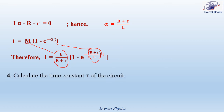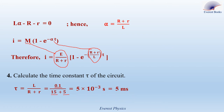Part 4: calculate the time constant τ of this circuit. The time constant τ is given by τ equal to L over (R plus r). Replacing each physical quantity: L is 100 millihenry, equivalent to 0.1 henry; capital R is 15 ohms and small r is 5 ohms. Therefore, τ is equal to 5 times 10 to the power minus 3 seconds, which is equivalent to 5 milliseconds.